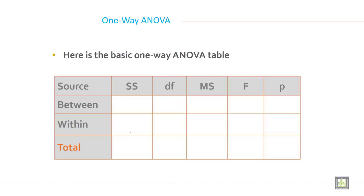Here is the basic one-way ANOVA table. This is the structure: SS, degree of freedom, MS, F value, and P value. This is for between the groups and this is for within the groups, and this is total. This is the format of the table whether you are calculating manually or using Excel, SPSS, or any software. The outcome of ANOVA will come in this format always.